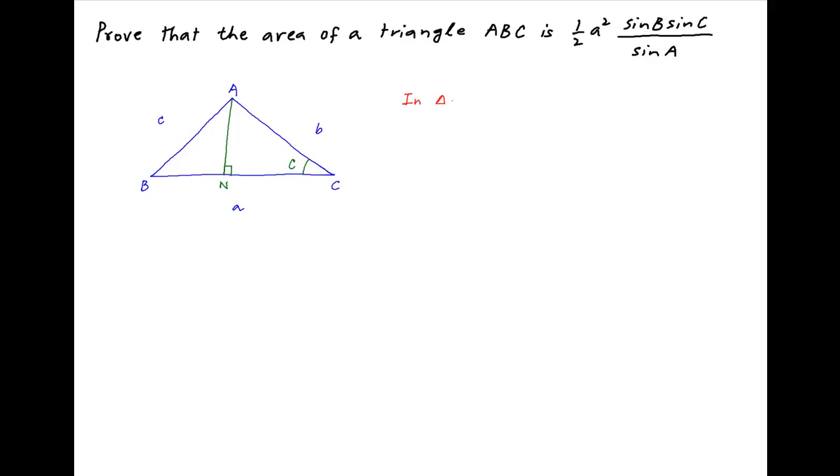Now in triangle ANC, the sine of angle C is equal to the perpendicular AN divided by the side AC. The side AC is equal to B, and therefore it follows that AN is equal to B times sine C.